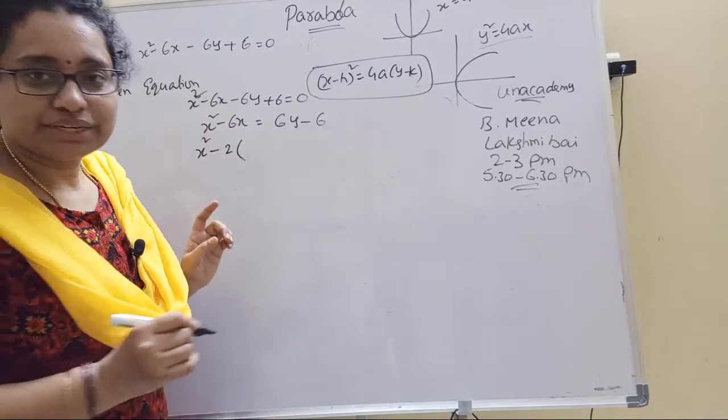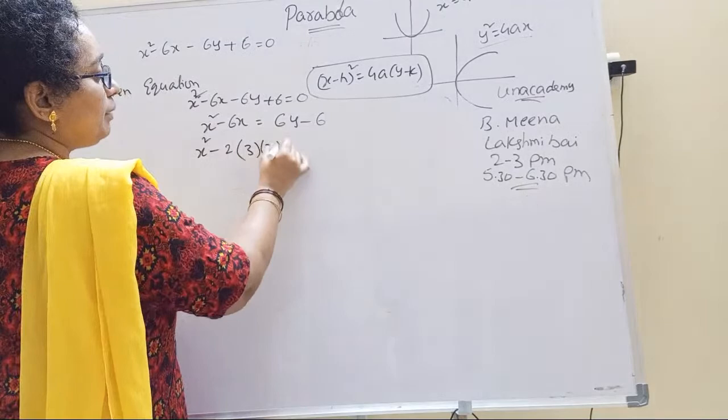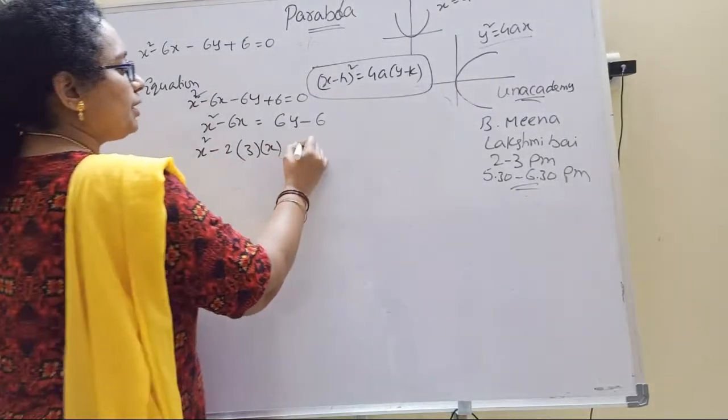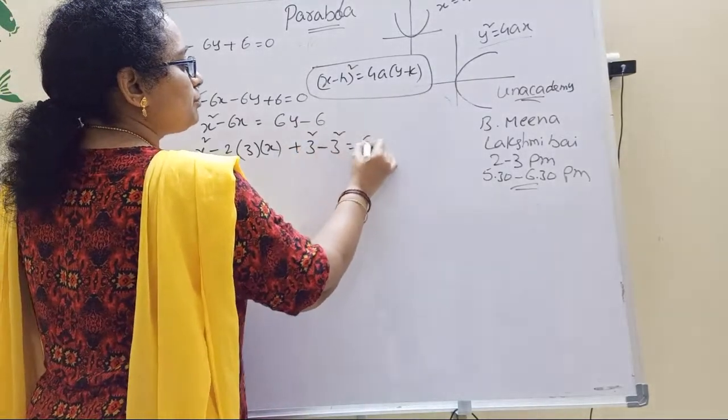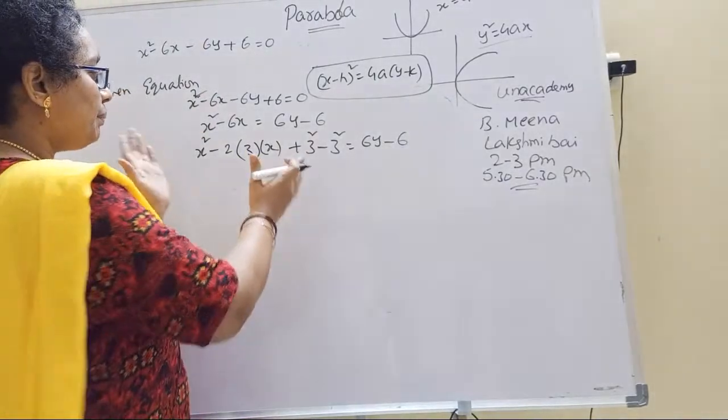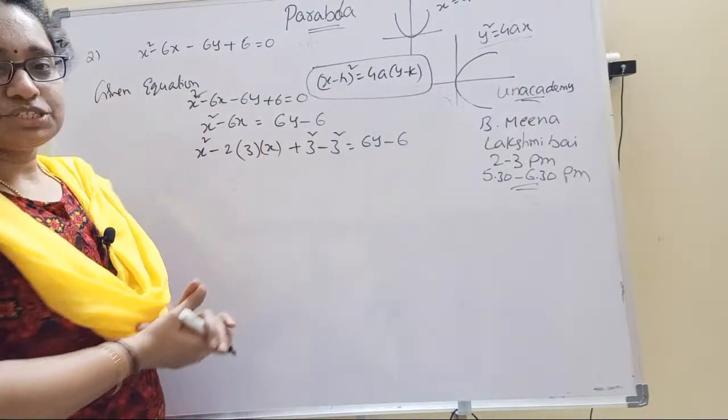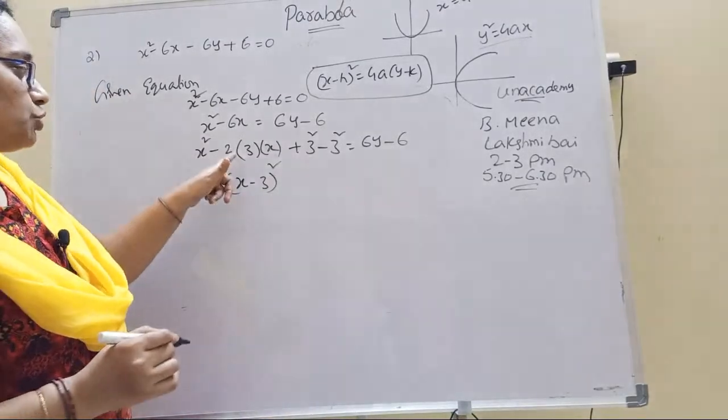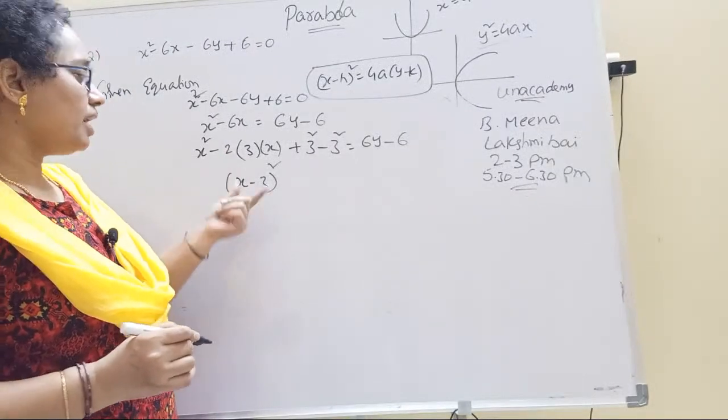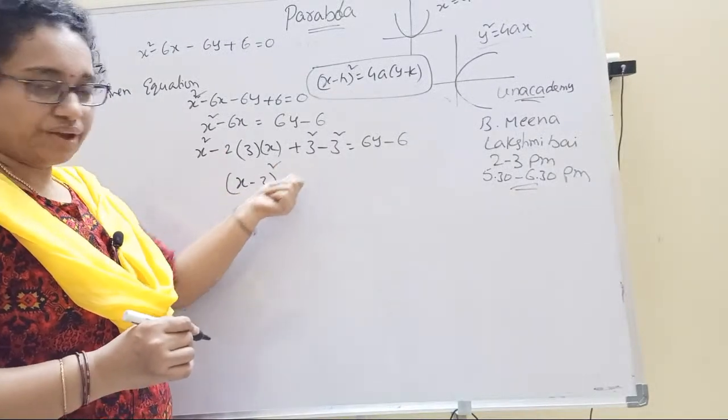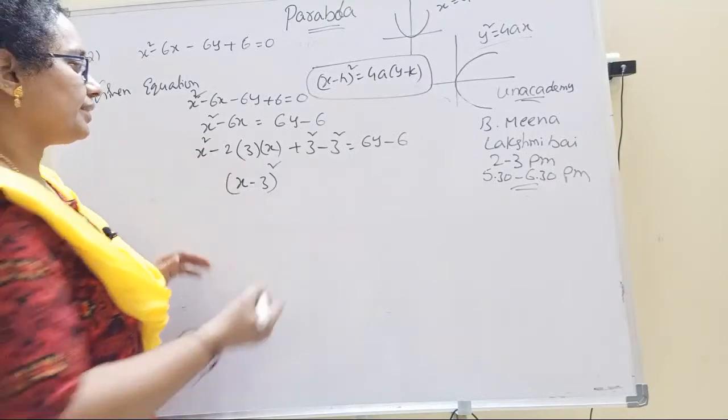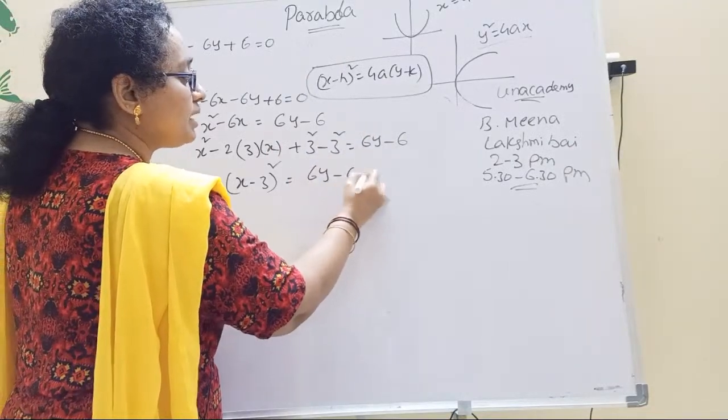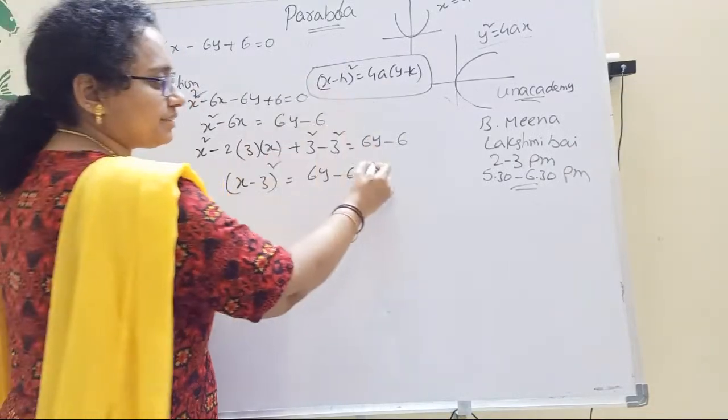x squared minus 6x equals 6y minus 6. Now, 6 divided by 2 is 3. We have 3 as b. We need b square, so b square add and subtract. 3 squared minus 3 squared equals 6y minus 6. We will get x minus 3 whole squared. x squared plus 3 squared minus 2 into 3 into x.